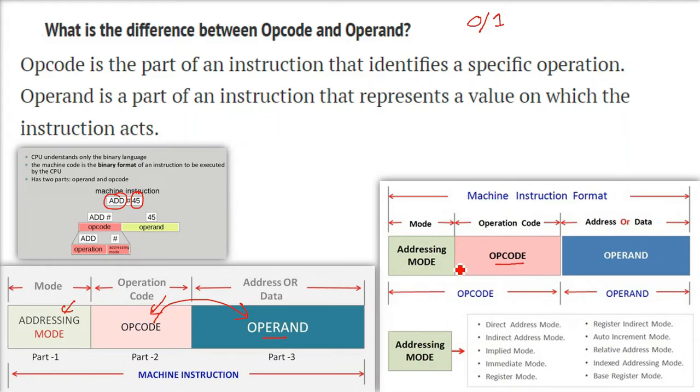So the whole instruction has op code which will work on operand. So op code is going to work on operand because both are the part of instruction. The first part you can say is the op code, operation code, which is going to operate on the operand. This value after the instruction is going to be the operand.